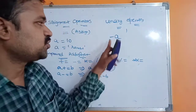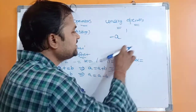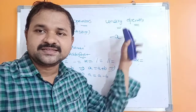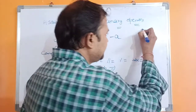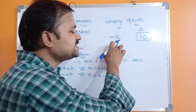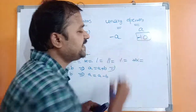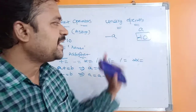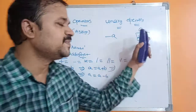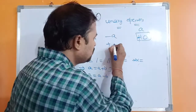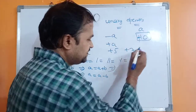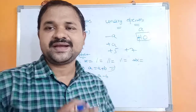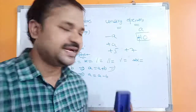For example, with the statement -a, using the minus operator we are changing the sign of a. If the initial value of a is 10, then after executing -a, the value becomes -10. If the initial value of a is -10, then minus of minus gives plus, so a becomes 10. We can also have +a, such as +5 or +7.